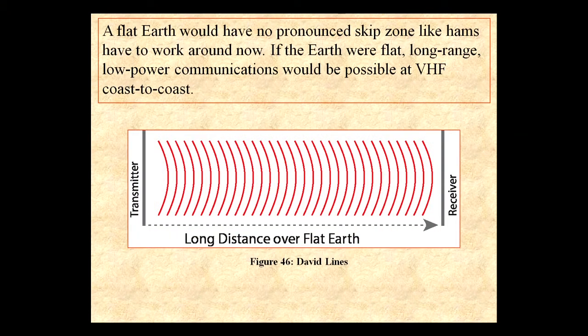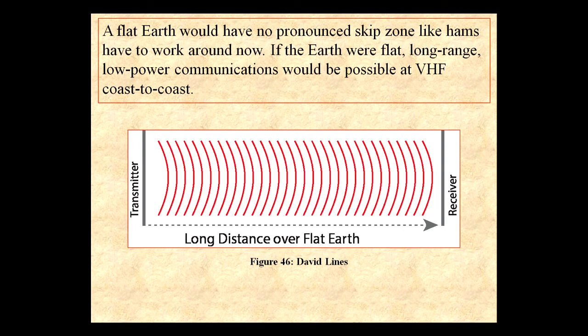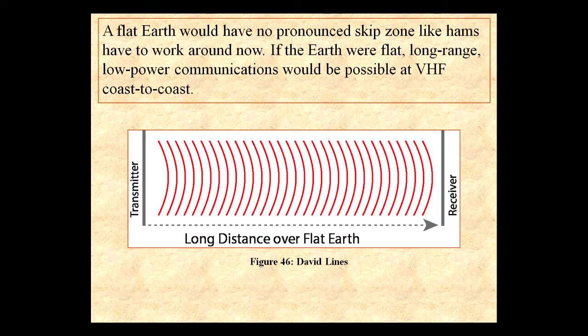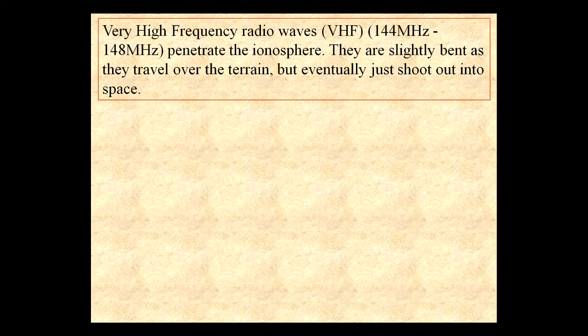A flat earth would have no pronounced skip zone like hams have to work around. If the earth were flat, long-range, low-power communications would be possible at very high frequencies coast to coast — the signal would travel right across from one side of the disk to the other with no problem. It's the sphericity that creates this problem.